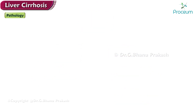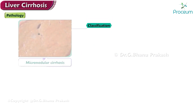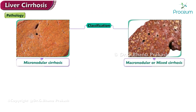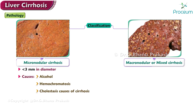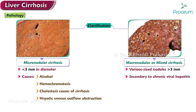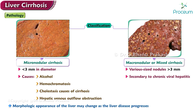Now let's move on to talk about the pathology of cirrhosis. Cirrhosis was historically classified morphologically as micronodular, macronodular, or mixed. Micronodular cirrhosis is characterized by nodules that are less than 3 mm in diameter and was believed to be caused by alcohol, hemochromatosis, cholestatic causes, and hepatic venous outflow obstruction. Macronodular cirrhosis is characterized by various size nodules larger than 3 mm and was believed to be secondary to chronic viral hepatitis. The morphologic appearance of the liver may change as the liver disease progresses; micronodular cirrhosis usually progresses to macronodular cirrhosis.